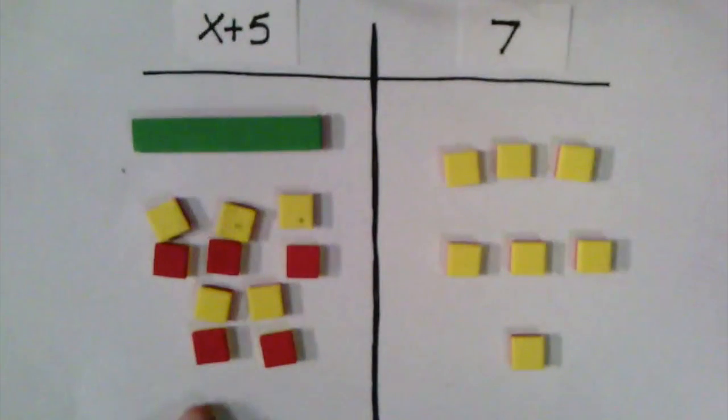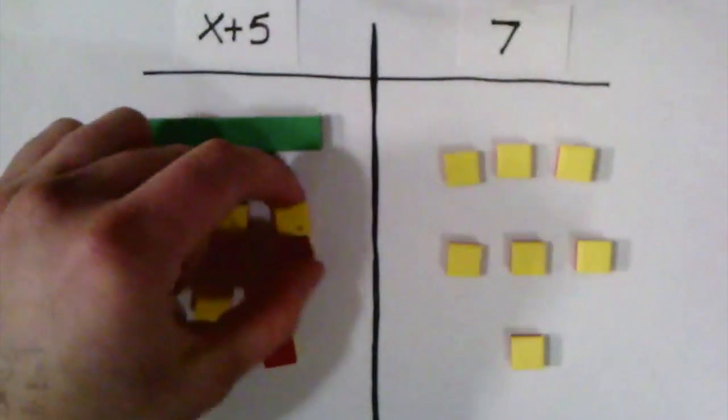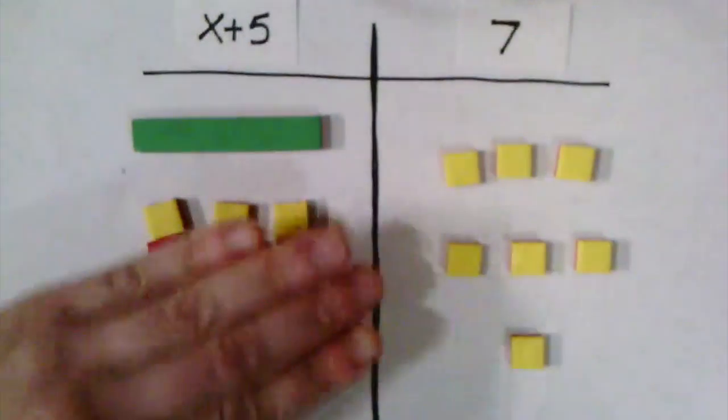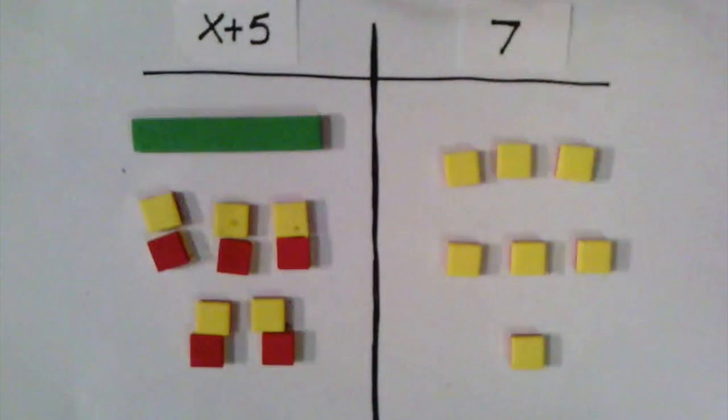So now on the left side of my equation, all these zero pairs cancel each other out and we're left with just a value of x. But that golden rule says whatever I do to the left side of the equation, I must do to the right side. So that means I must now add 5 red tiles to the right side of the equation.